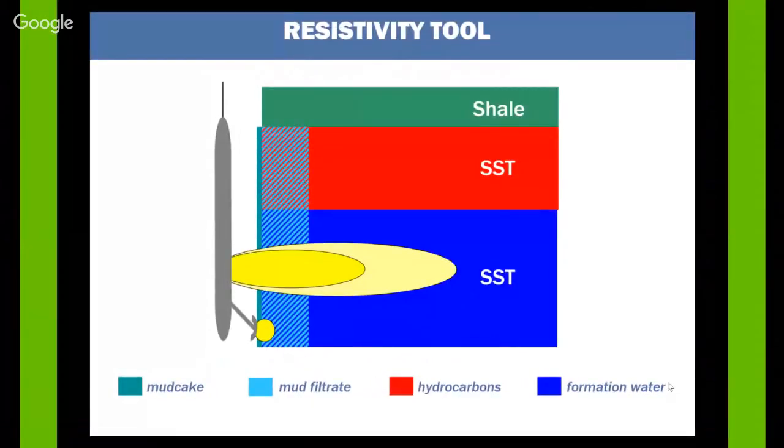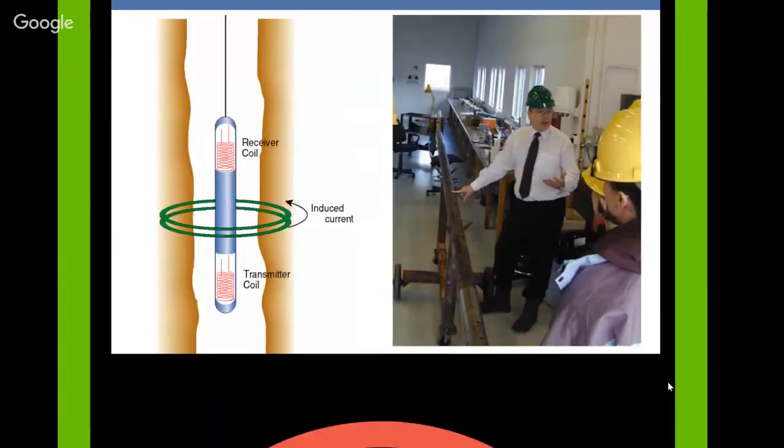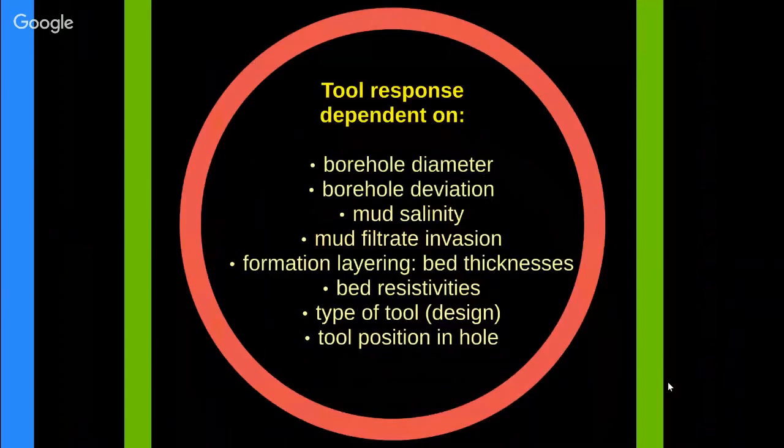Here you see the response of near and long space detectors. As for the induction logging tool, it consists of a receiver coil, transmitter coil and induced current. Basically, resistivity logs response to the borehole diameter, borehole deviation, mud salinity, mud filtrate invasion, formation layering, bed resistivities, type of tool and tool position in hole.